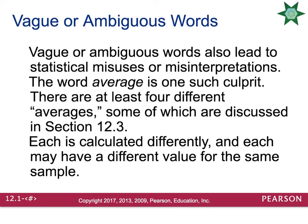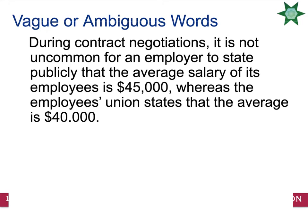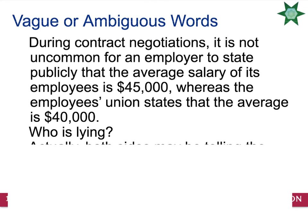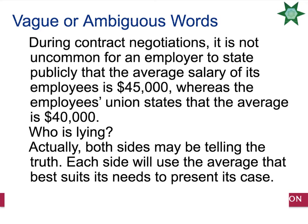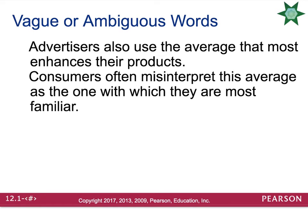Vague or ambiguous words also lead to statistical misuses. The word 'average' is one such culprit — there are at least four different averages, each calculated differently and each may have a different value for the same sample. During contract negotiations, it is not uncommon for an employer to state publicly that the average salary is $45,000, whereas the union states the average salary is $40,000. Both sides could be telling the truth, because each side will use the average that best suits its need. Advertisers also use the average that most enhances their product, which consumers often misinterpret.